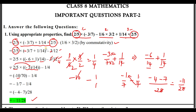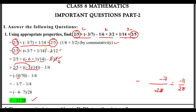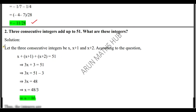Similar questions are given in the practice worksheet. To download the worksheet, join my Telegram group and WhatsApp channel. The exam starts from March 11 — try to solve all these questions and don't wait until exam time. Now the second question: 3 consecutive integers add up to 51. What are these integers?